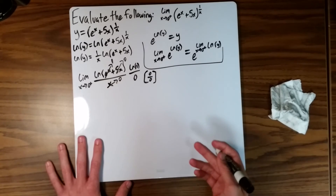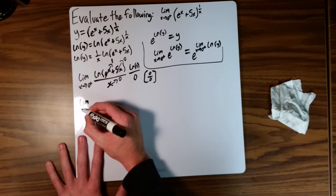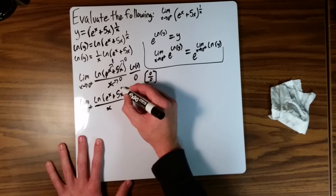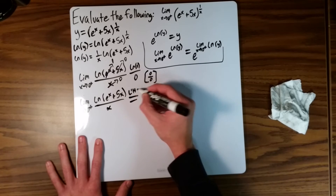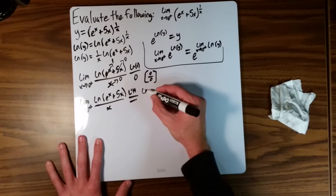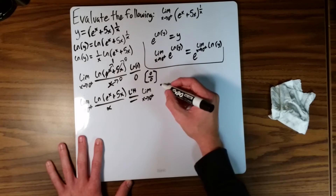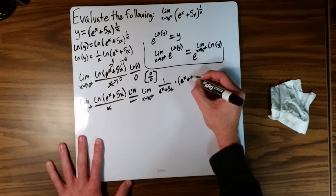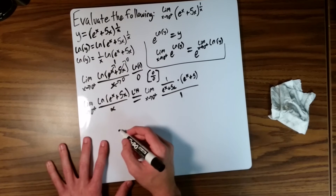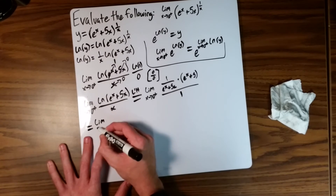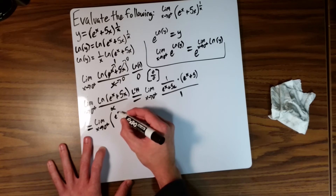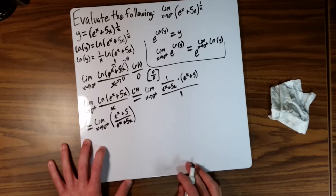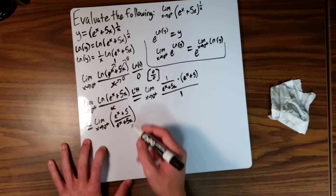Since it's in the indeterminate form 0 over 0, we can apply L'Hôpital's rule. We take the derivative of the top and the bottom independently. The derivative of the numerator gives 1 over (e to the x plus 5x) times the derivative of the interior, which is e to the x plus 5, all over the derivative of the denominator, which is just 1. This simplifies to the limit as x approaches 0 from the right of (e to the x plus 5) over (e to the x plus 5x). We check whether we need to differentiate again.